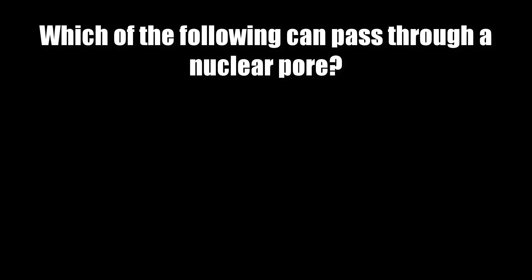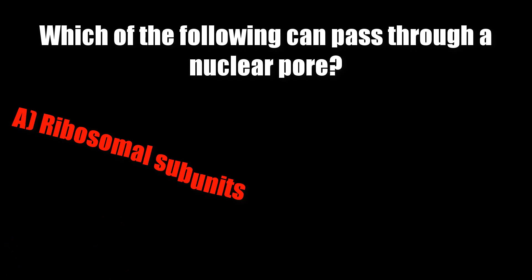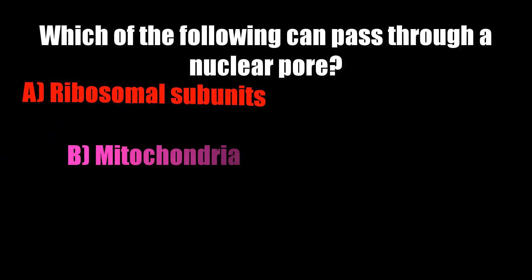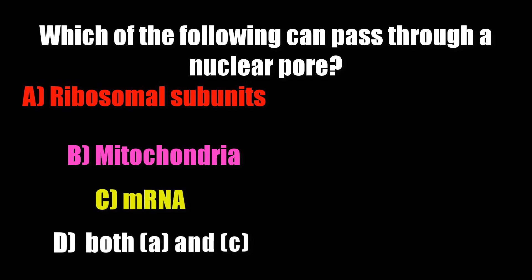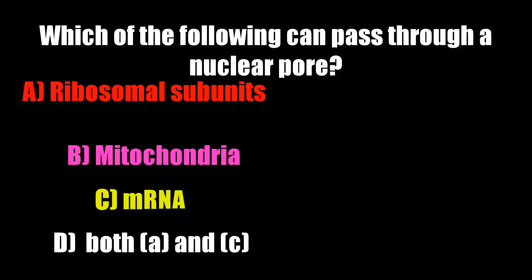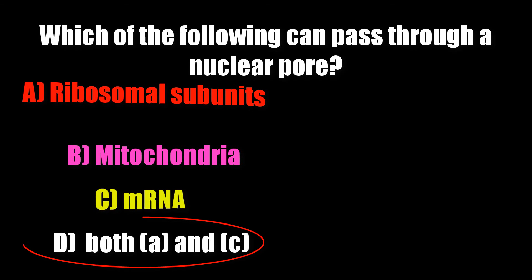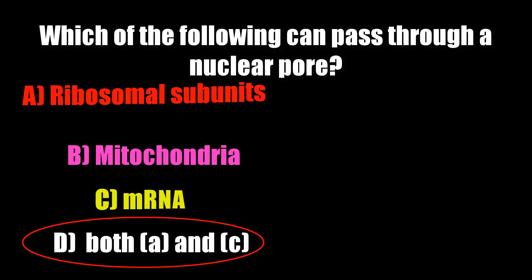Which of the following can pass through a nuclear pore? Options: ribosomal subunits, mitochondria, messenger RNA, both A and C. Correct answer is both A and C.